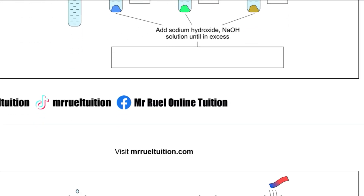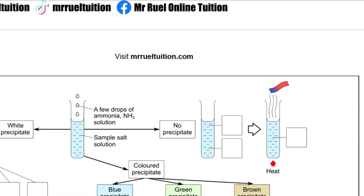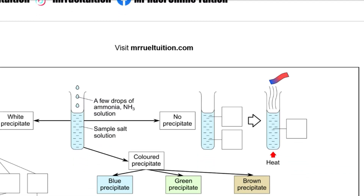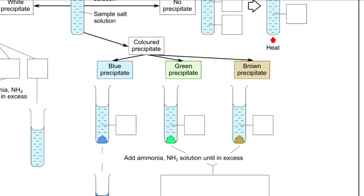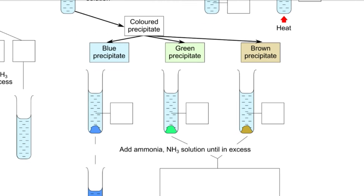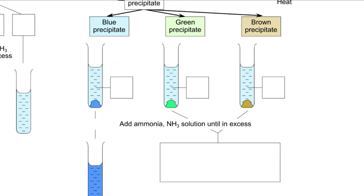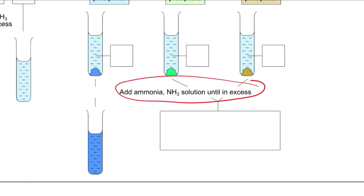Under the cation test we can also use ammonia solution. If we add a few drops of ammonia solution we get the same colored precipitates. However, if we add ammonia solution in excess, we get a dark blue solution when Cu2+ ion is present.